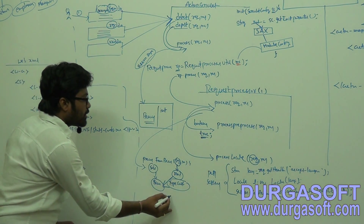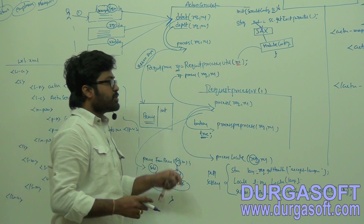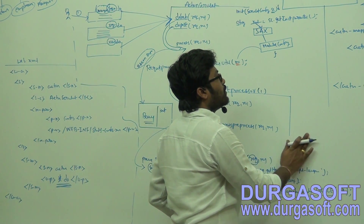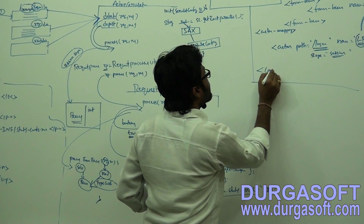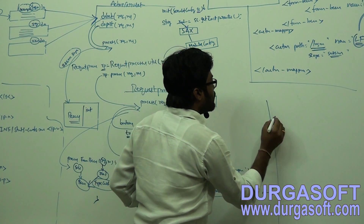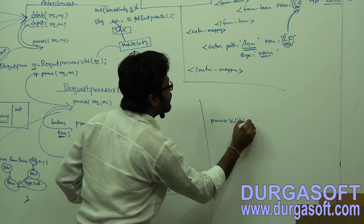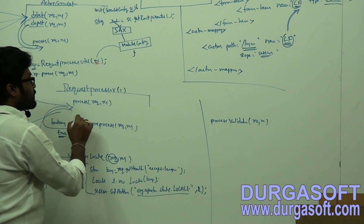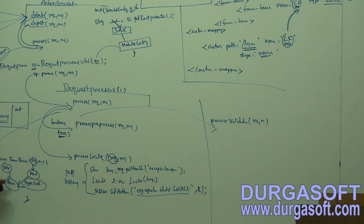After storing data into the bean object, the process method will call one more method: processValidations. This processValidation method will get your bean object - it will get your same bean reference from session scope.